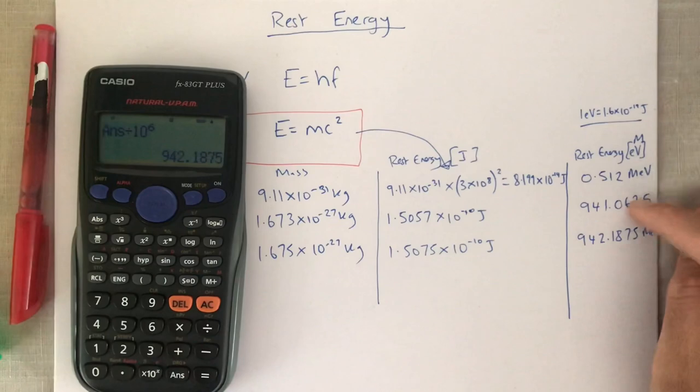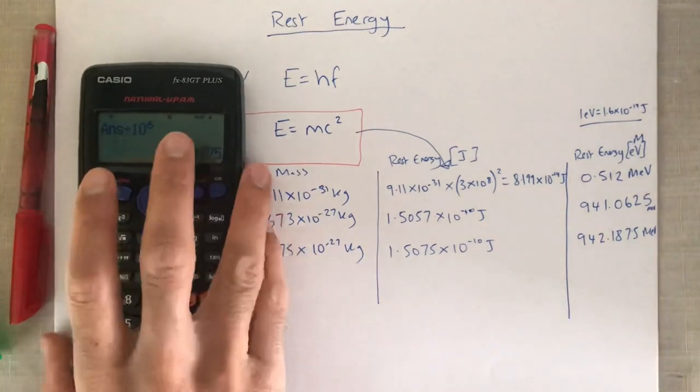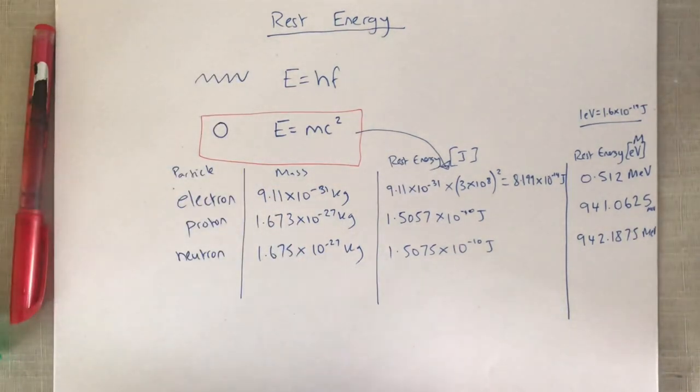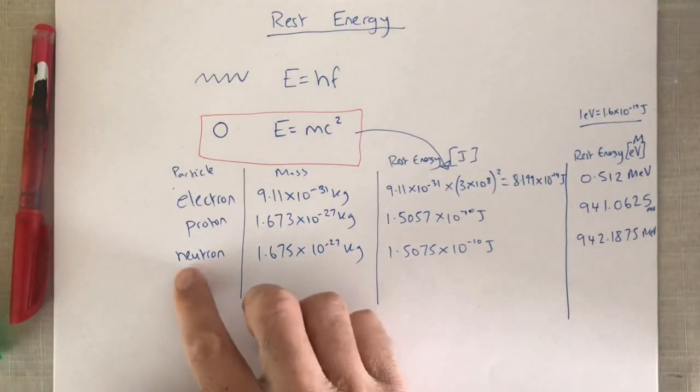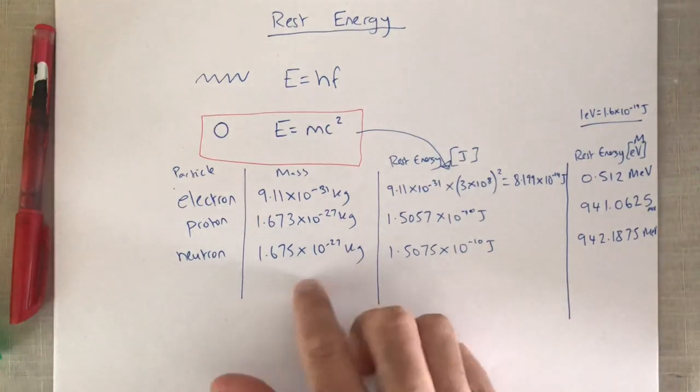So currently we have three numbers over here which are in mega electron volts. As you can see, the particle with the largest amount of rest energy is the neutron, and that was only because it had the largest mass.